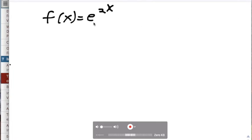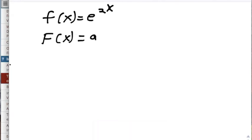Now when I try to take an antiderivative, since I think exponentials have derivatives that look a lot like them, my guess is going to be capital F of x is some constant a times e to the 2x.